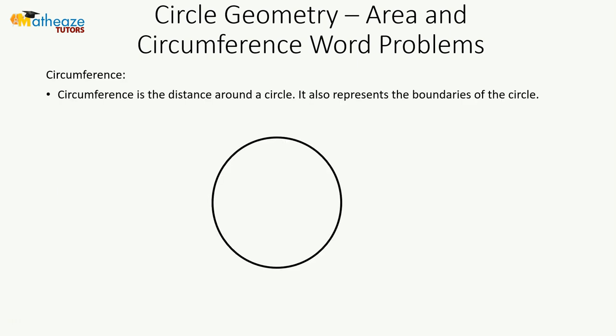The circumference is the distance around a circle. It also represents the boundaries of the circle, or you can describe this as the perimeter of the circle.